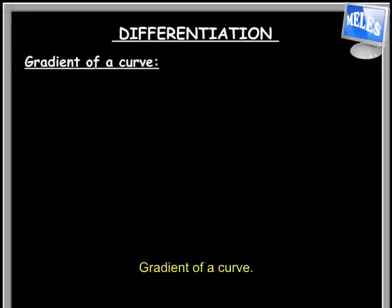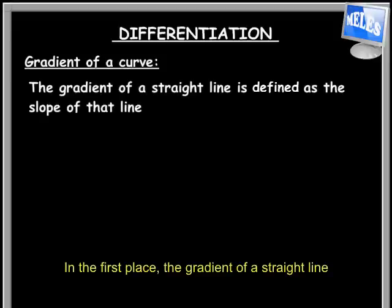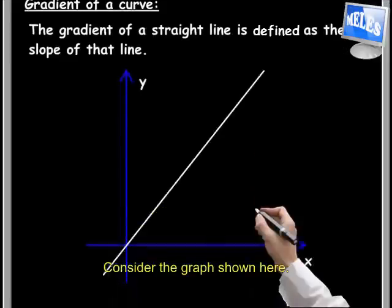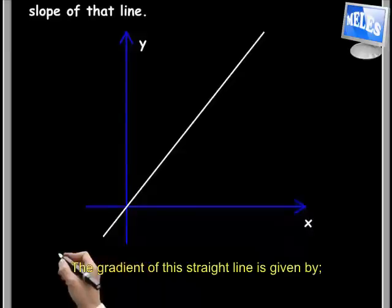Differentiation: gradient of a curve. In the first place, the gradient of a straight line is defined as the slope of that line. Consider the graph shown here.